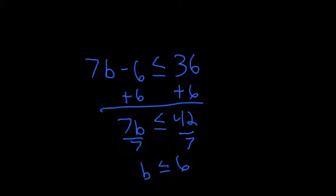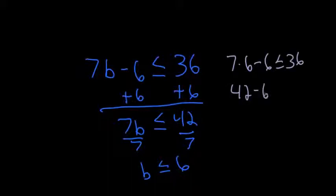I'll go ahead and use 6 in my check. So 7 times 6 minus 6 is less than or equal to 36. 7 times 6 is 42, and 42 minus 6 is less than or equal to 36.